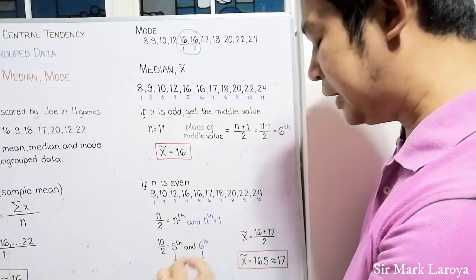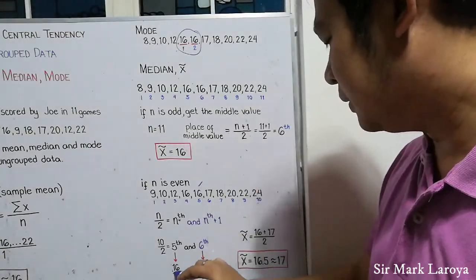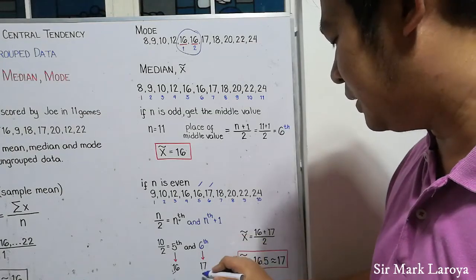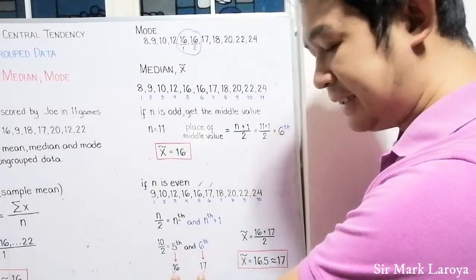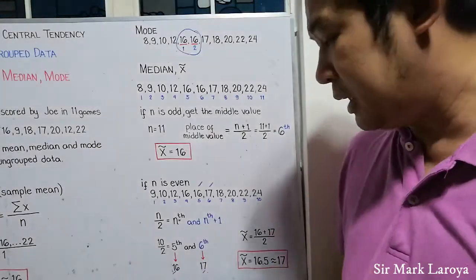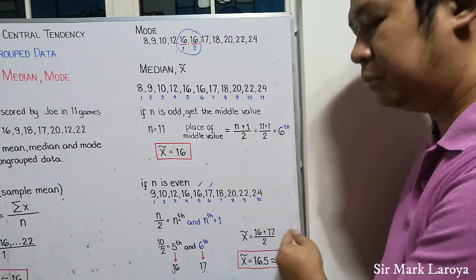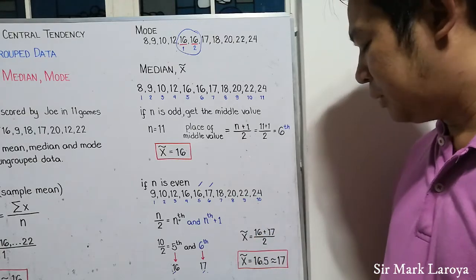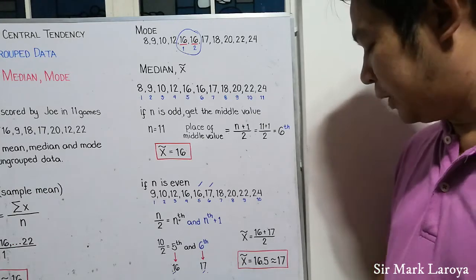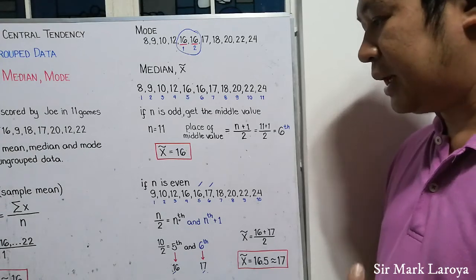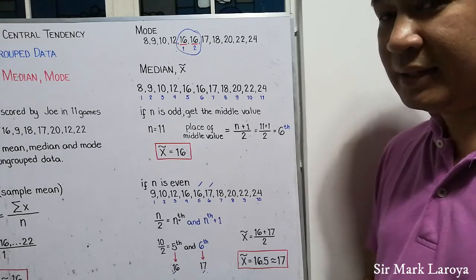So, identify the 5th and the 6th values. The 5th value is 16 and the 6th value is 17. In this case, we have 2 different values, 16 and 17. To get the median, we simply get the mean of the 2 different values that is (16 + 17) / 2. And so, we will have a median equal to 16.5 or that is equal to 17. So, that is how we get the median for a set of values wherein n is even.